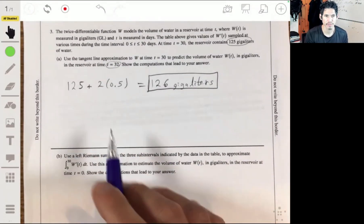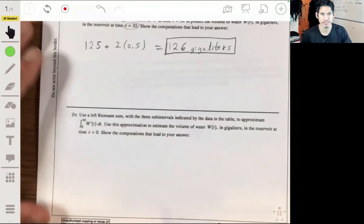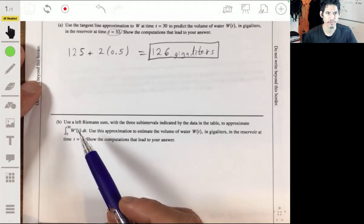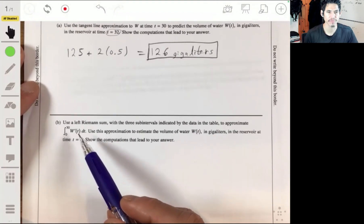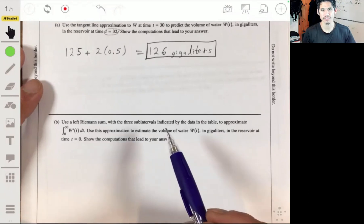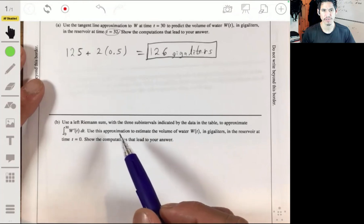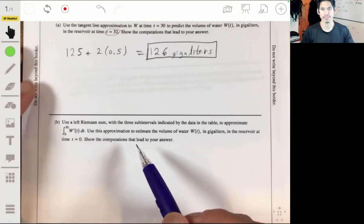Part B: use a left Riemann sum with the three subintervals indicated by the data in the table to approximate the integral from 0 to 30 of w prime of t dt. Use this approximation to estimate the volume of water in gigaliters in the reservoir at time t equals 30. Show the computations that led to your answer.